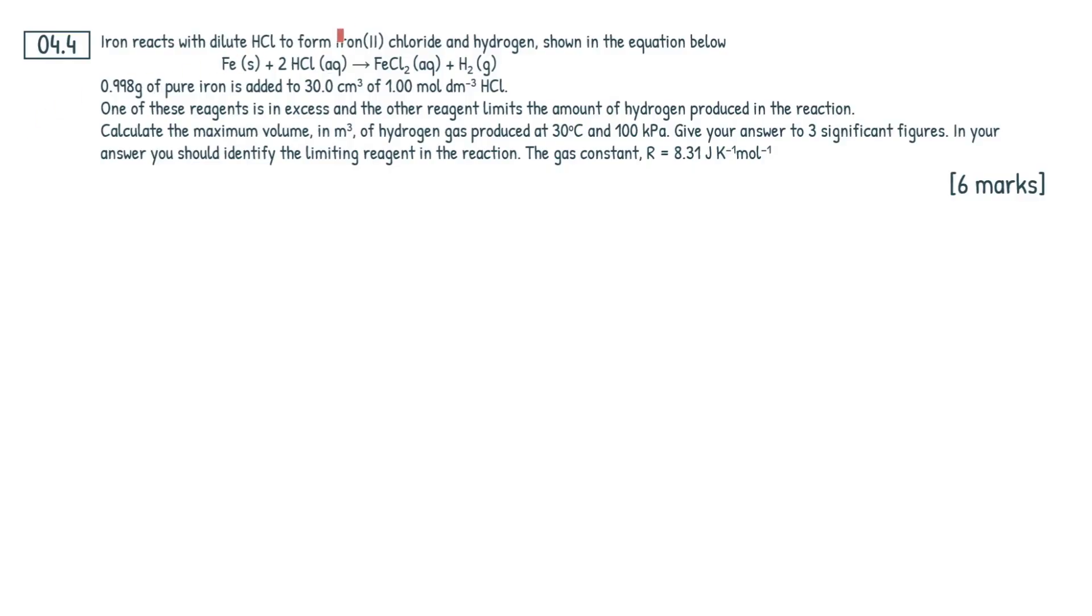So iron reacts with dilute HCl to form iron(II) chloride and hydrogen shown in the equation below. Given a nice equation here, saves us doing it ourselves and we're given some variables. So 0.998 grams of pure iron is added to 30 cm³ of 1 mol/dm³ HCl. One of these reagents is in excess and the other reagent limits the amount of hydrogen produced in the reaction. Calculate the maximum volume, now this is just a confusing way to say calculate the volume, in metres cubed of hydrogen gas produced at 30°C, 100 kPa. Give your answer to three sig figs. In your answer, you should identify the limiting reagent in the reaction.